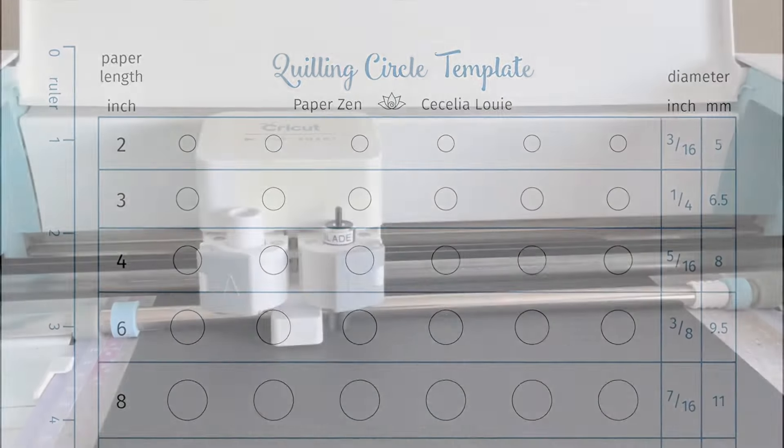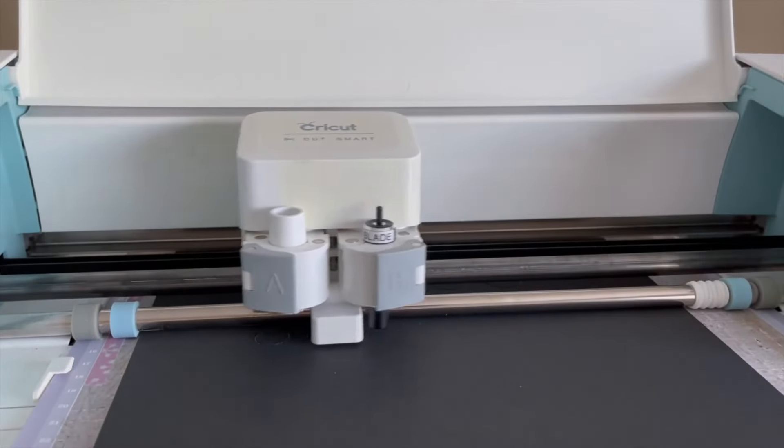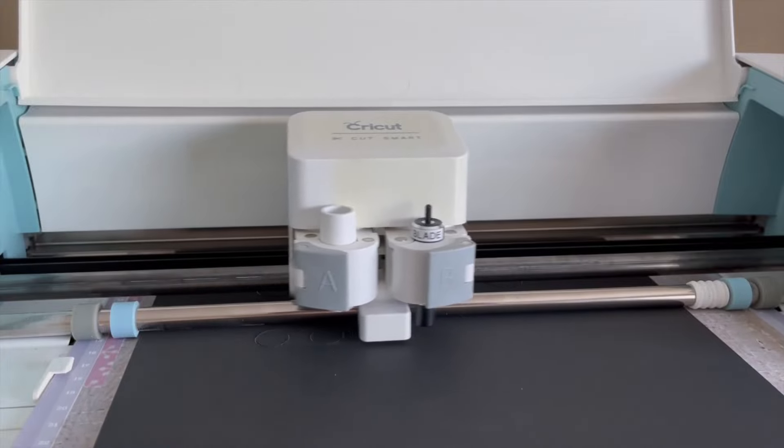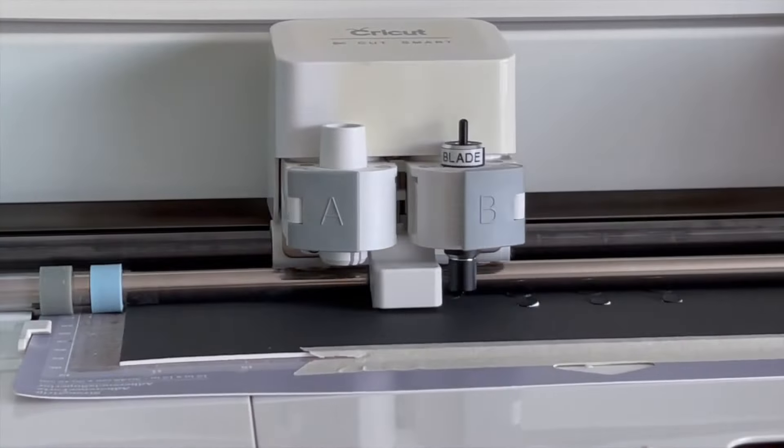If you have an electric cutting machine that can cut SVG files, then you can cut your own circle template for quilling. I'll leave a link below this video where you can download my free files.